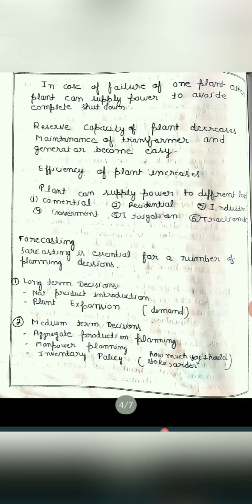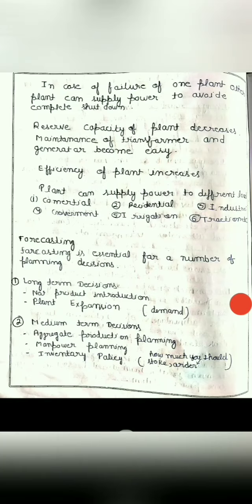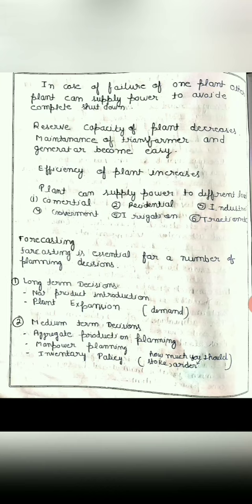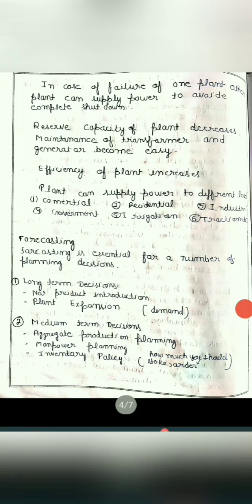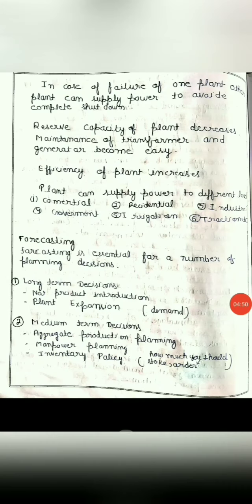Second is medium term decision. There are three decisions in medium term decision. First, aggregate production planning. Second, manpower planning. And third, inventory policy. In aggregate production planning, we know how much we should produce in each month to meet the fluctuating demand, because demand is always fluctuating.